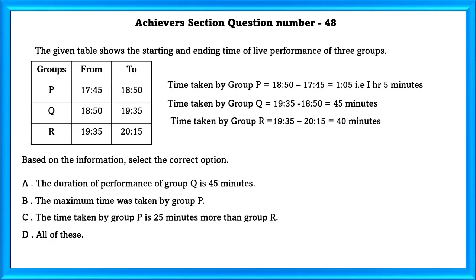Now we will see the options. Duration of performance of group P is 45 minutes. Yes, that is correct. The maximum time was taken by group P. That is also correct. The time taken by group P is 25 minutes more than group R. Yes, that is also correct. So our answer is D. All of these.